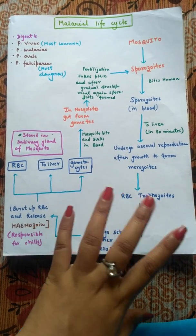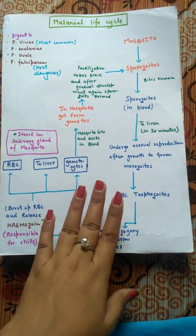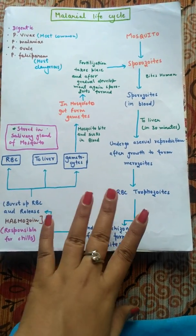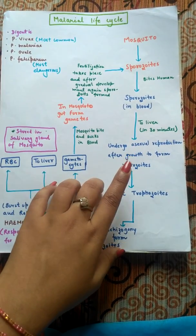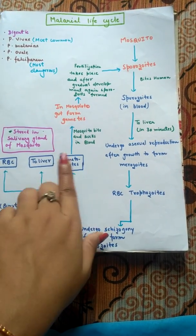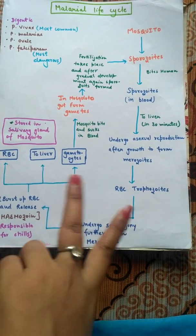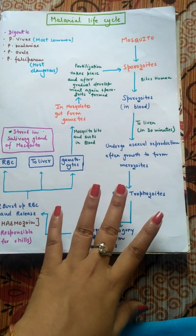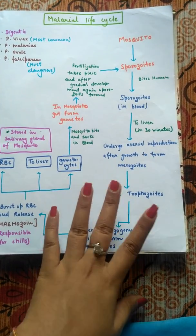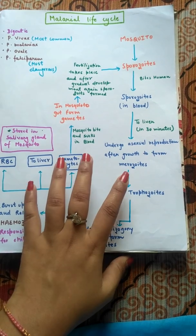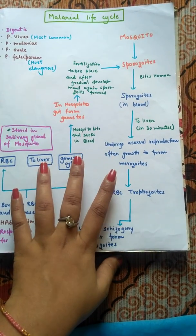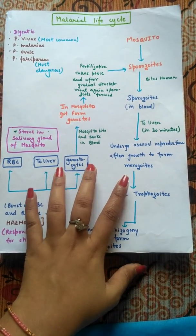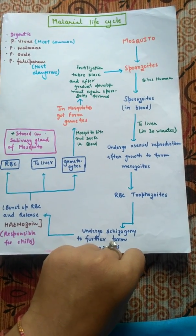This is a simple way to understand the malarial parasite's life cycle. The cycle involves both asexual and sexual reproduction occurring in the liver, RBCs, and mosquito gut, with key chemicals like hemozoin playing important roles. This life cycle is very important to remember, especially for competitive exams. I hope this video helps you — thank you, friends.